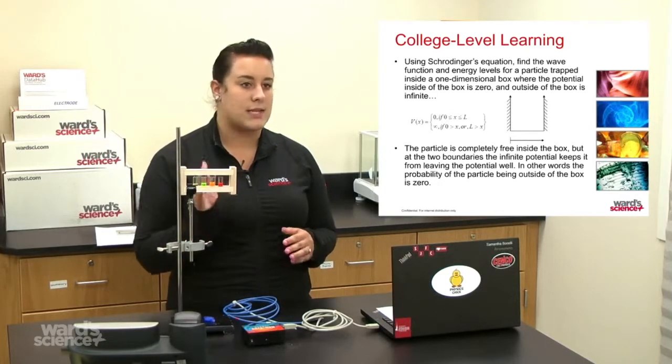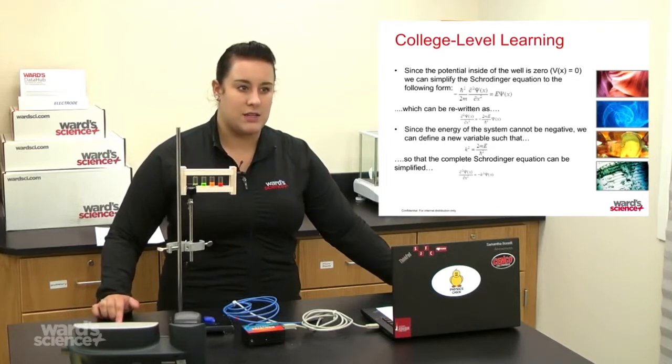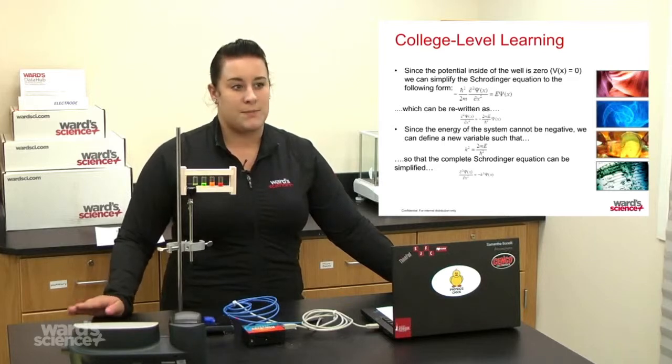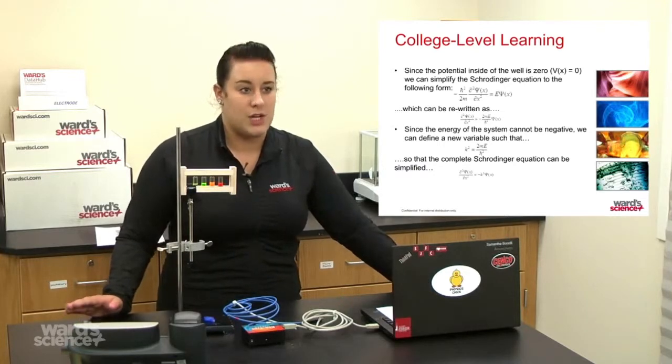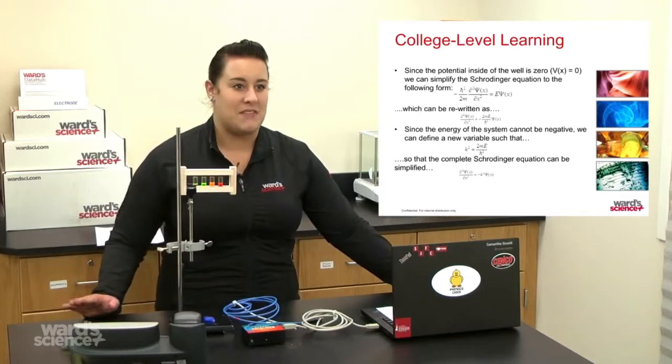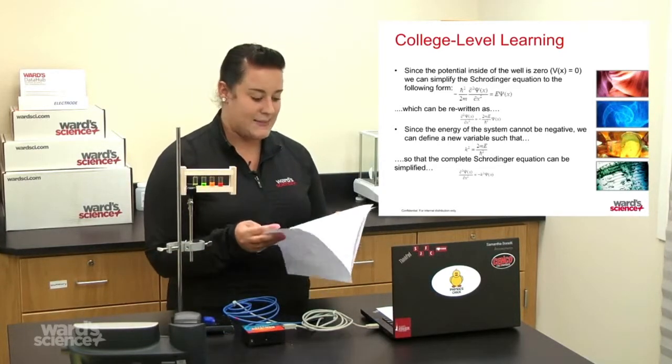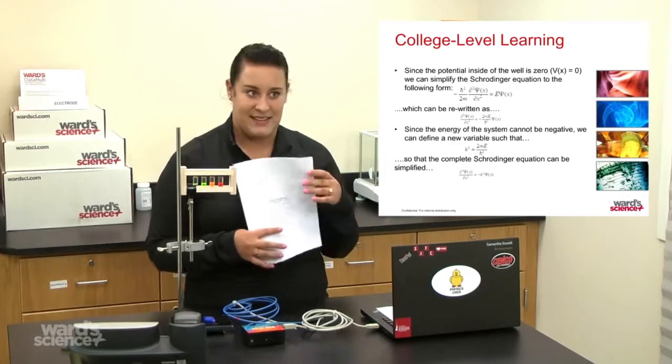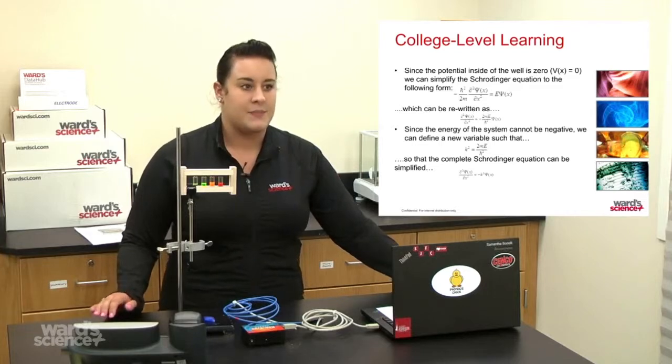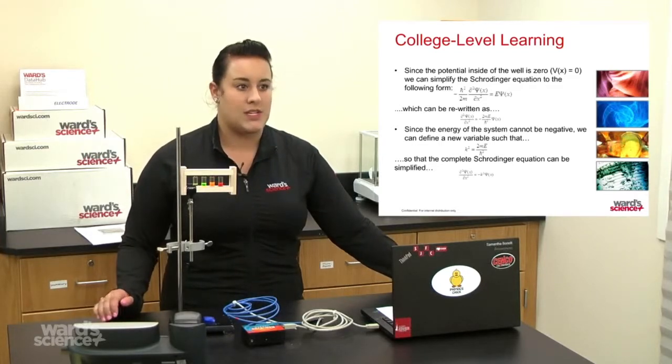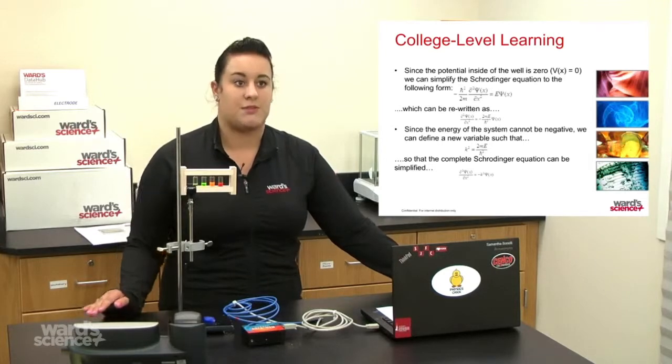Since the potential inside of the well is zero, which means V(x) is also zero, we can simplify the Schrödinger equation to the following form. I've put that on the PowerPoint slide for a visual. Anytime I hear that Schrödinger's equation can be simplified, it's music to my ears because I remember having the original Schrödinger, and I actually have it in this packet that we provide with the lab, and it's so many pages long. So the fact that we can simplify that is phenomenal. We can rewrite it a couple of times when the students simplify their math. Since the energy of the system can't be negative, we can define a new variable. That's on your PowerPoint to look at. And the complete Schrödinger equation can be simplified even further.